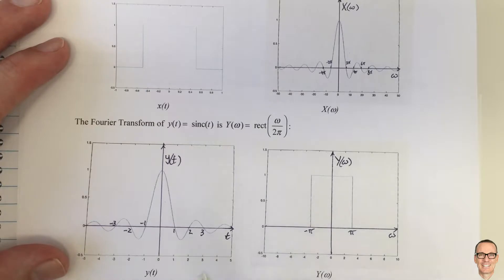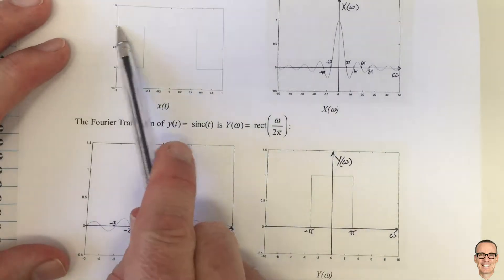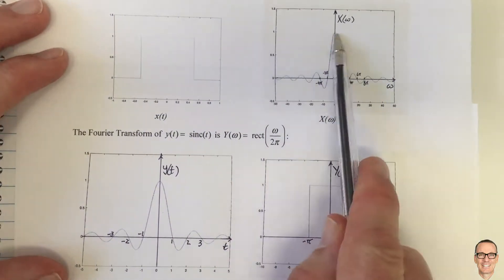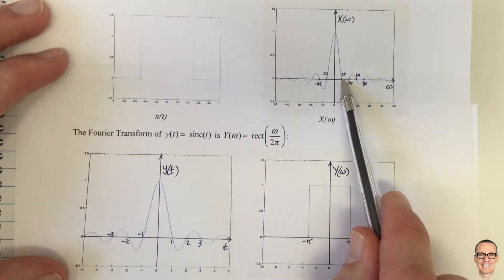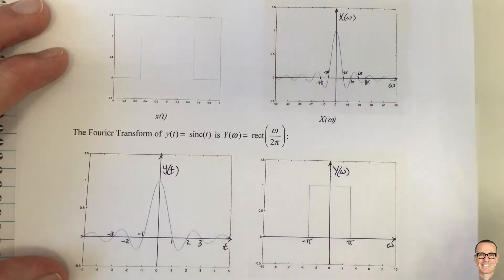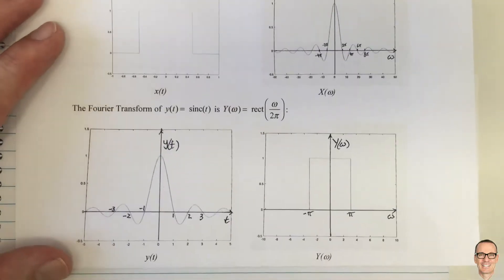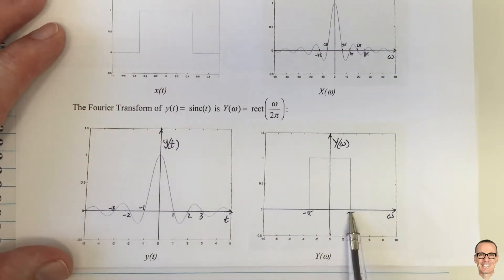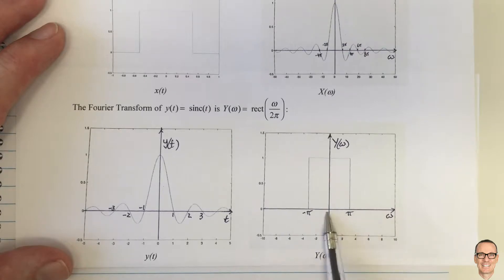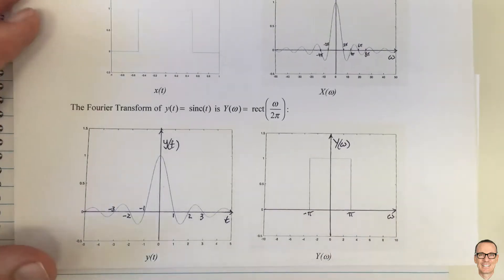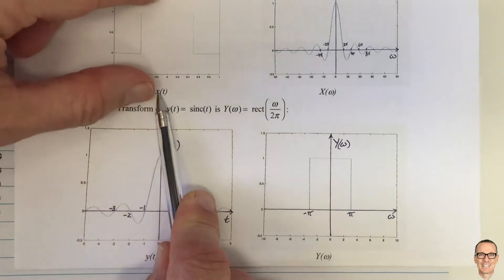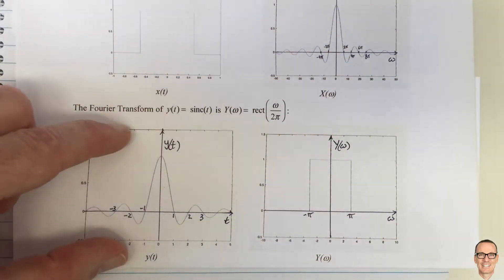Notice that the height of the rect is 1 and the height of the sinc is also 1. The first crossing point of the sinc is at 2π, the crossing point of the rect is at 1, and the rect has width from −π to π. This is x(t), and the other function is y(t).